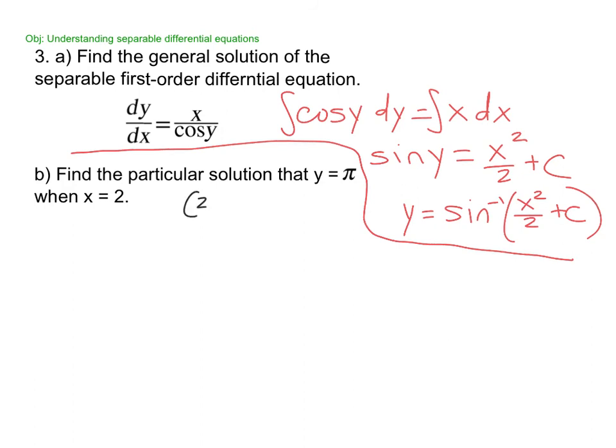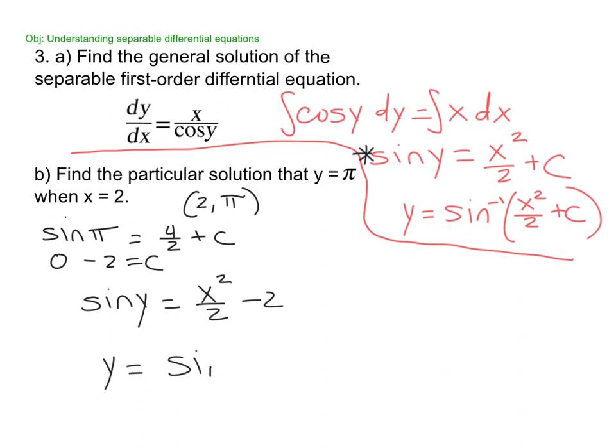But I'm going to solve. I'm going to plug in to find my C value. So I've got 2 comma π. So we've got sin(π). Again, I'm plugging in to this guy. So sin(π) equals 4/2 plus C. Sin(π) is 0. And then minus 2. So C is negative 2. Sin(y) equals x²/2 minus 2. So y equals arcsin. And then again, I like to make one big denominator. So minus 4 all over 2. That's my answer.